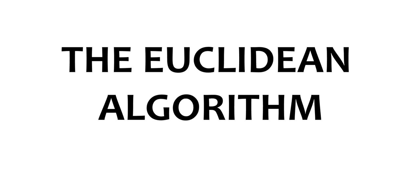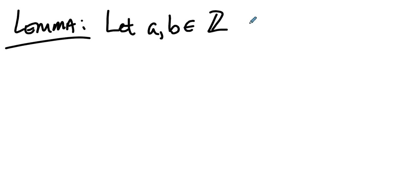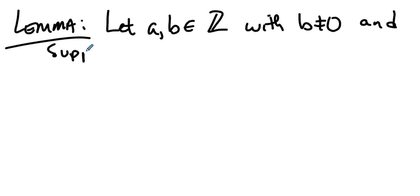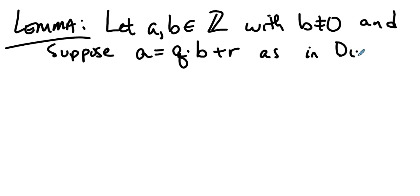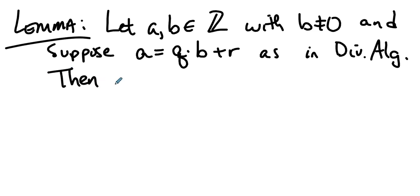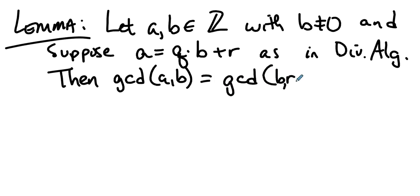We are ready for something a little bigger. Let's look at a lemma that sets up the Euclidean algorithm. We let a and b be integers with b not zero, and suppose that a equals q times b plus r as in the division algorithm, where q and r are integers and r is between 0 and the absolute value of b. Then the greatest common divisor of a and b equals the greatest common divisor of b and r.